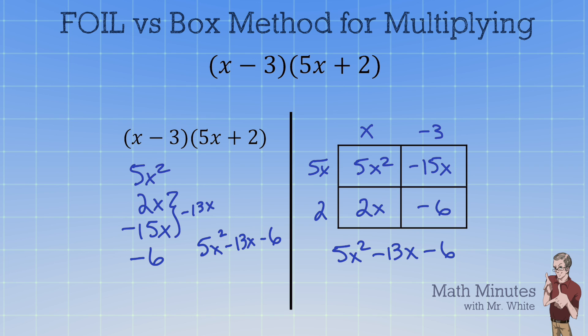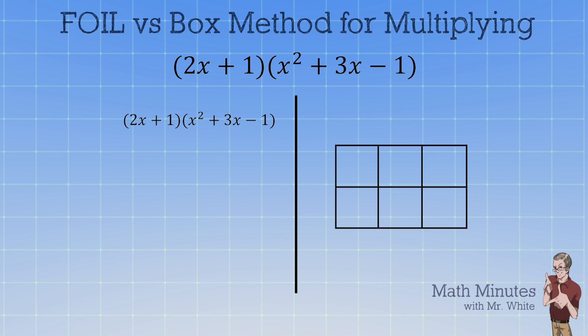Whoa, this one's really different, isn't it? We've got a binomial times a trinomial. Now certainly FOIL is out the window because we can't do FOIL. We actually have six multiplication problems we have to do with the left hand method. So this is where the box method starts to be more attractive to me.